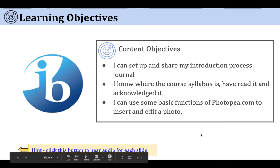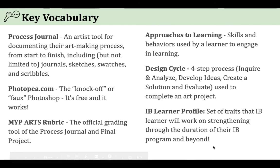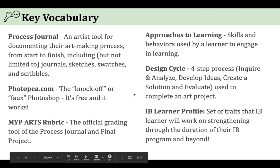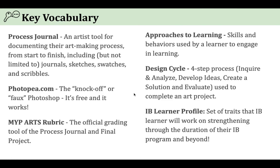These are your objectives for the day. If you're seeing any of this terminology as you go through the stuff you have to do today, this is here for you to be aware of what these things are. The process journal is an artist tool for documenting the art-making process — we're going to put a lot of stuff in it. It's not just for drawings or sketches; it's for reflecting and lots of stuff. Photopea.com is the fake Photoshop. The last four on the list — MYP rubric, design cycle, and IB Learner Profile — are all part of IB knowledge. We'll go over those in greater detail as our projects progress throughout the semester.